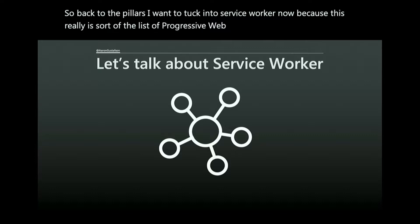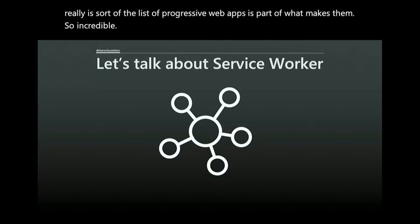Now back to service worker — this really is the linchpin of progressive web apps. A service worker is a kind of web worker, a JavaScript concept that allows a script to run in its own thread and communicate back and forth with the main thread. The whole idea is to reduce network dependence. I like to think of it as my own personal man-in-the-middle, because it allows me to intercept and manipulate web traffic.